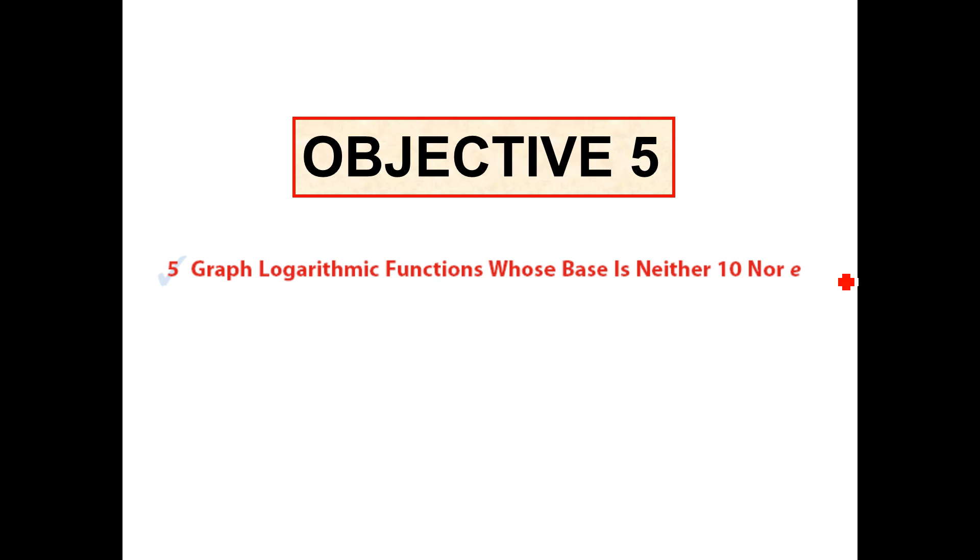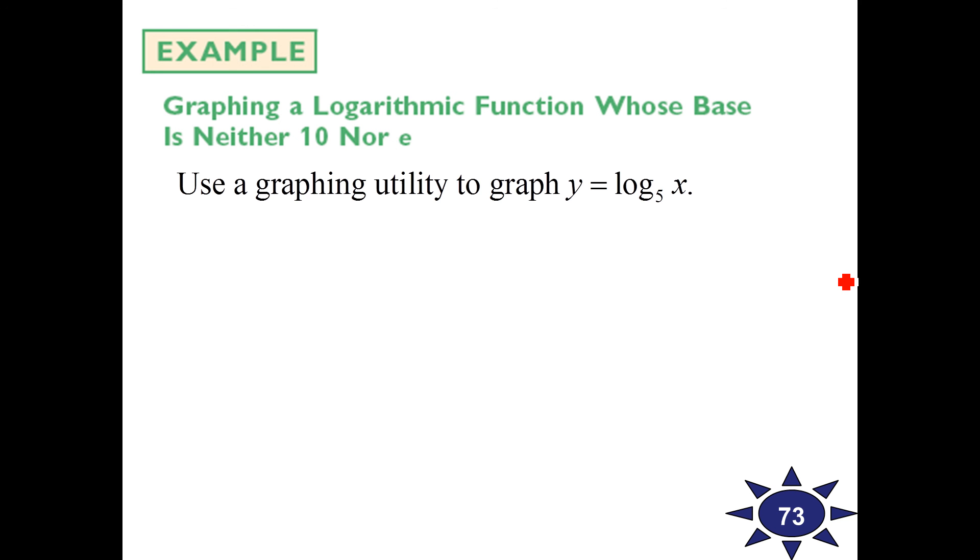Last one to do. Graph logarithmic functions whose base is neither 10 nor e. So let's graph this. Y equals log base 5 of x. We're going to rewrite this. We're going to have 5 to the y equals x. First things first. Let's get ourselves an asymptote. This one here plus 0 in here. So our asymptote is still x equals 0. And let's make ourselves a table. Get two nice points here. Best point to pick for y is 0. So that's 5 to the 0 is 1. And another good point for y would be 1. 5 to the first power is 5. So 1 comma 0 and 5 comma 1. We've got an asymptote. We've got two points. We can graph it.